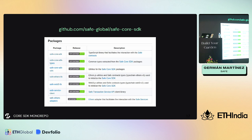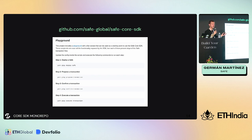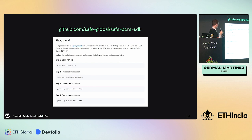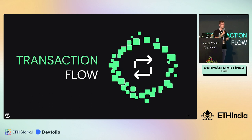In this monorepo we have these packages, plus a guide that shows you step by step how to use the SDK - how to propose a transaction, sign it, and execute it. We also have a playground, which is something new. It is a folder called 'playground' with a few scripts where you just modify a couple of configuration parameters like your Safe address and the RPC you want to use, and then you'll be able to deploy a Safe, propose a transaction, sign it, and execute it.